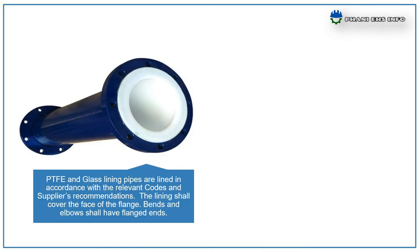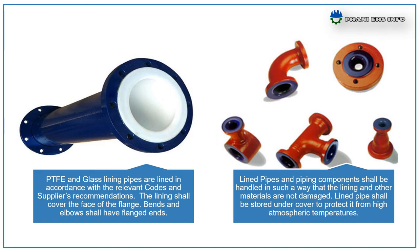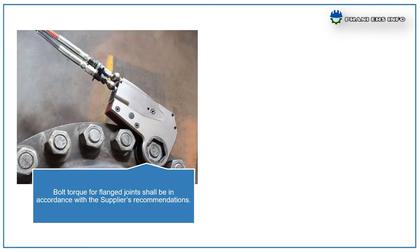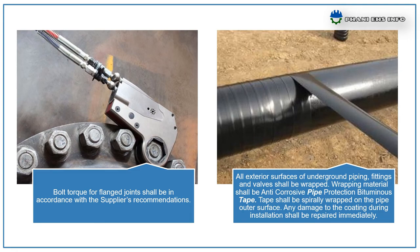PTFE and glass-lining pipes shall be lined in accordance with relevant codes and supplier's recommendations. The lining shall be flush with the face of the flange. Bends and elbows shall have flanged ends. Lined pipes and piping components shall be handled so that the lining and other materials are not damaged. Lined pipes shall be stored under cover to protect from high atmospheric temperatures. Bolt torque for flanged joints shall be in accordance with supplier's recommendations. All exterior surfaces of underground piping, fittings, and valves shall be wrapped with anti-corrosive pipe protection tape, spirally wrapped on the piping outer surface. Any damage to the coating during installation shall be repaired immediately.